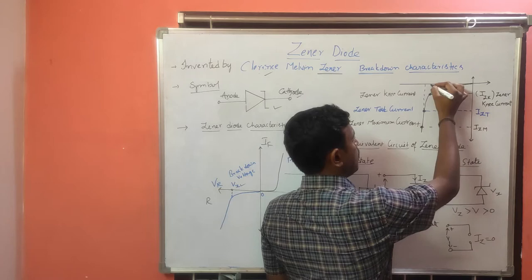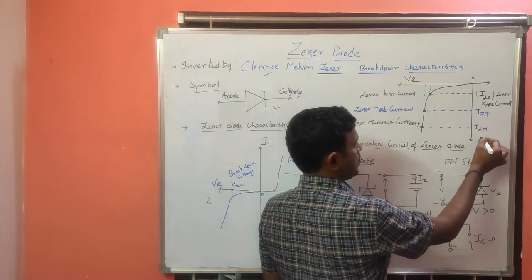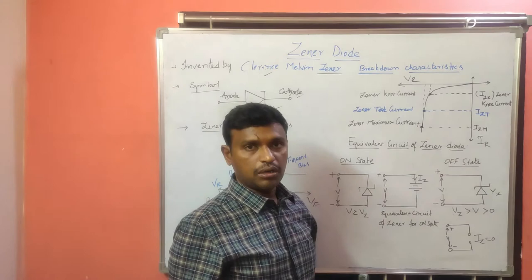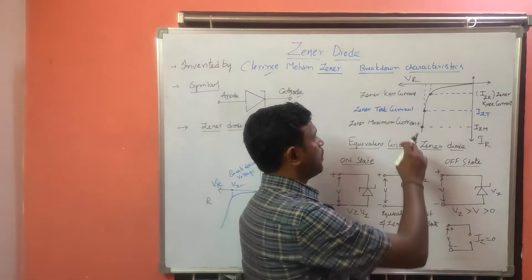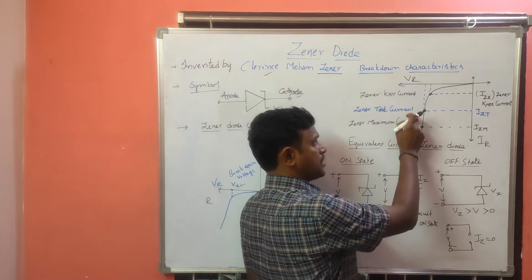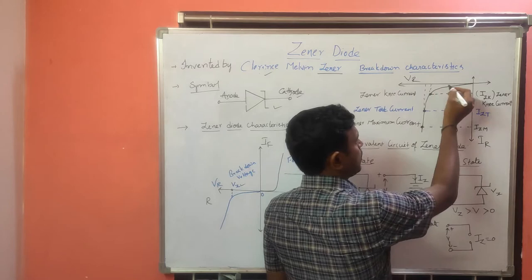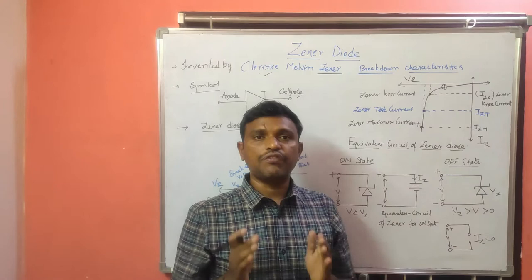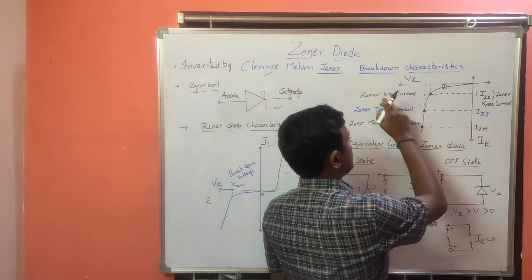Up to the knee point, the reverse saturation current Ir is very, very less — this is the GINA knee current. It looks like a knee, that's why it is called knee current. After this point, the junction breakdown is obtained, the current rises sharply, and the final current reached is the GINA maximum current.